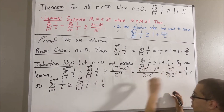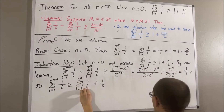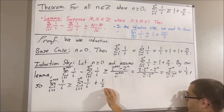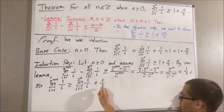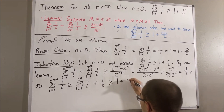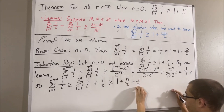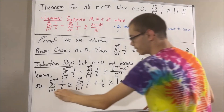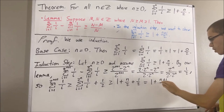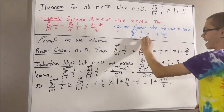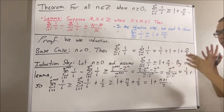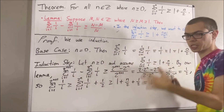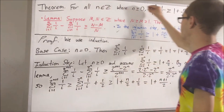Therefore, the sum with 2 to the n plus 1 is greater than or equal to the sum with 2 to the n, plus 1 half. And by our induction hypothesis, we know that the sum with 2 to the n is greater than or equal to 1 plus n over 2. Therefore, this entire thing is greater than or equal to 1 plus n over 2 plus 1 half. And we know that n over 2 plus 1 half is equal to n plus 1 over 2. So we have established that the sum with 2 to the n plus 1 is greater than or equal to 1 plus n plus 1 over 2, which is exactly what we wanted to show. This completes the induction step, and because we've completed both the base case and the induction step, this closes the induction. So we have proven the theorem.